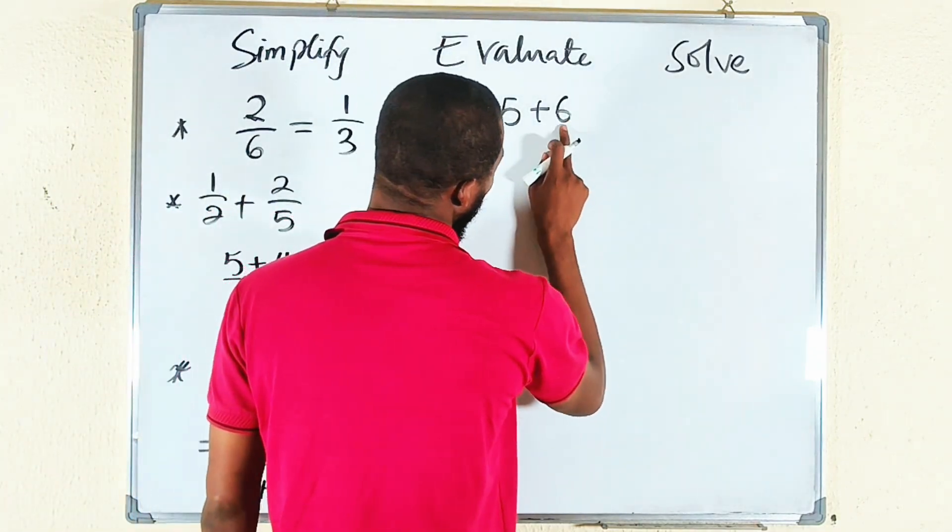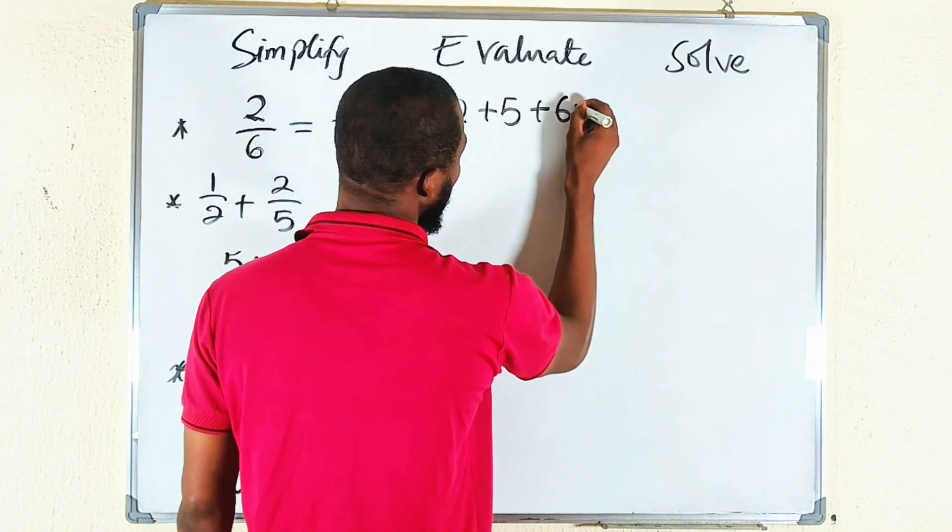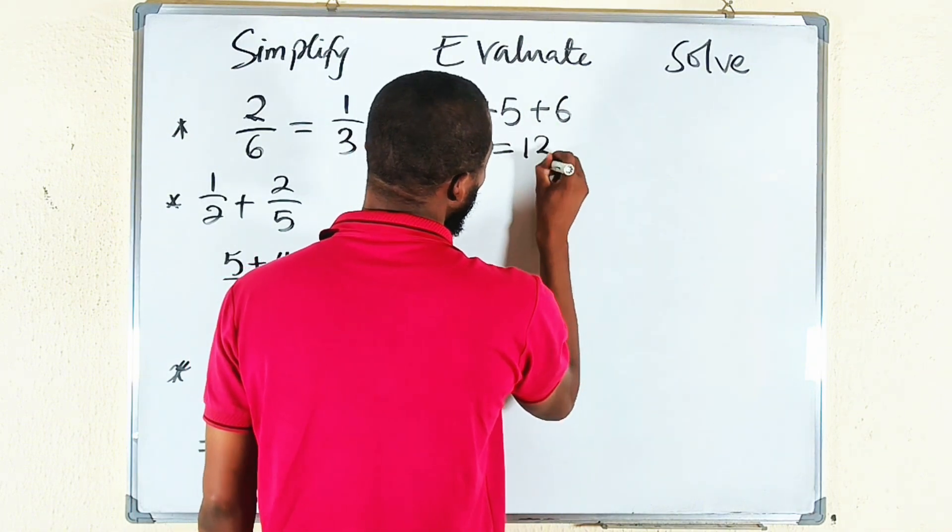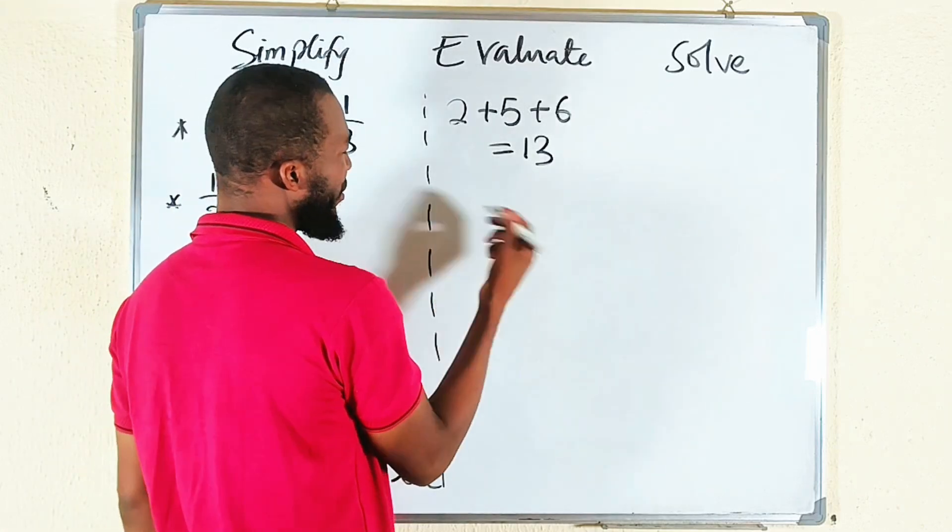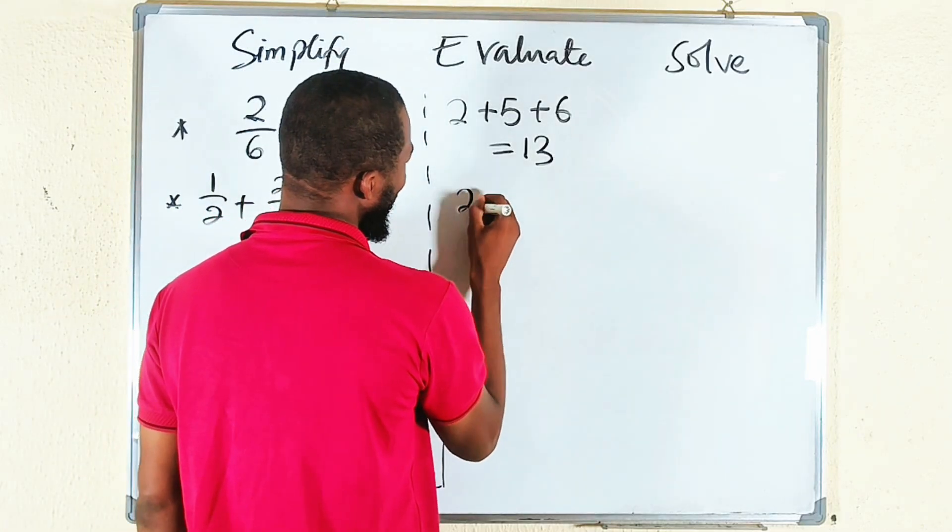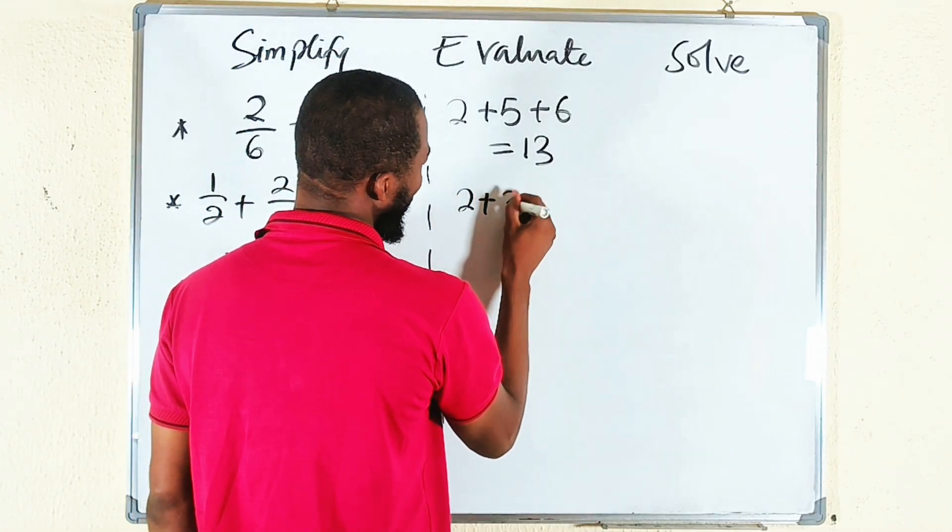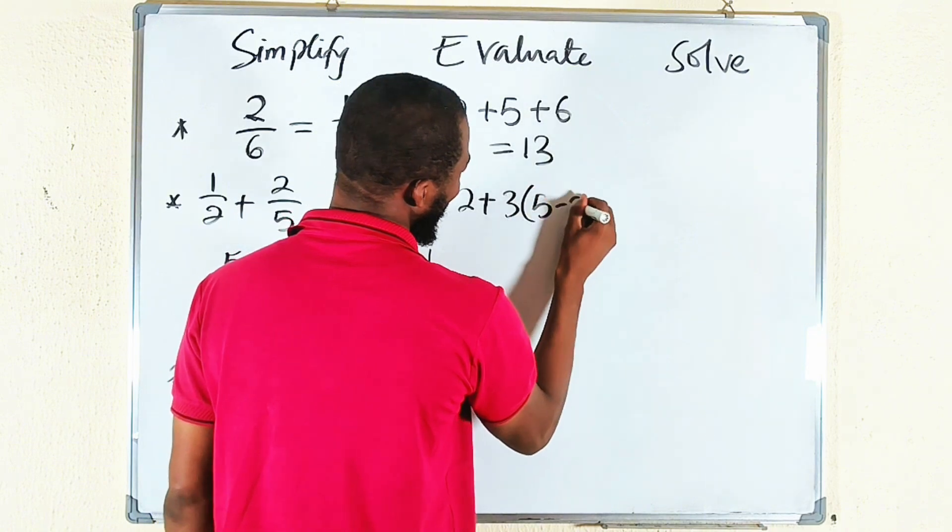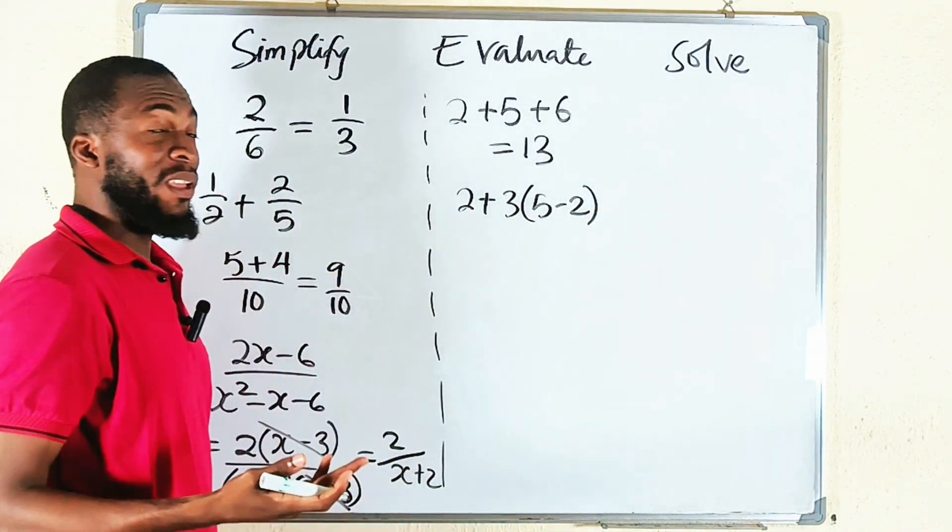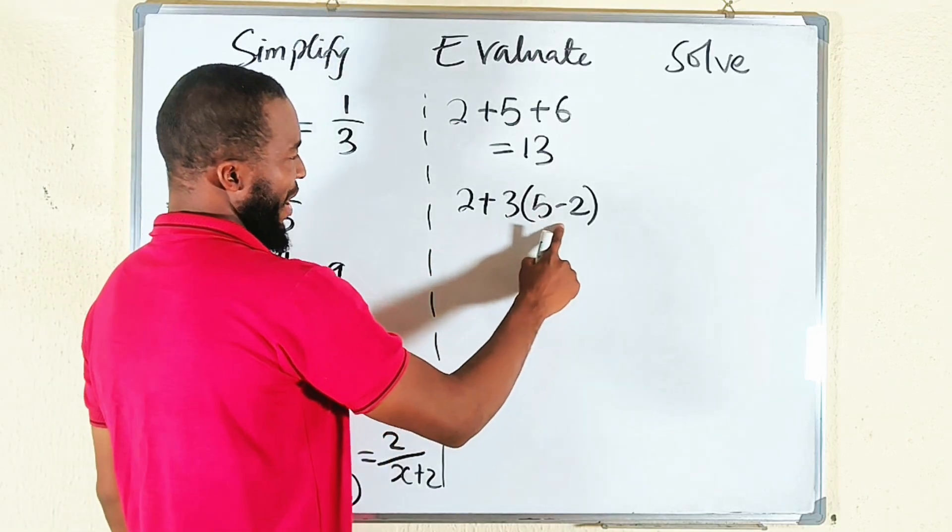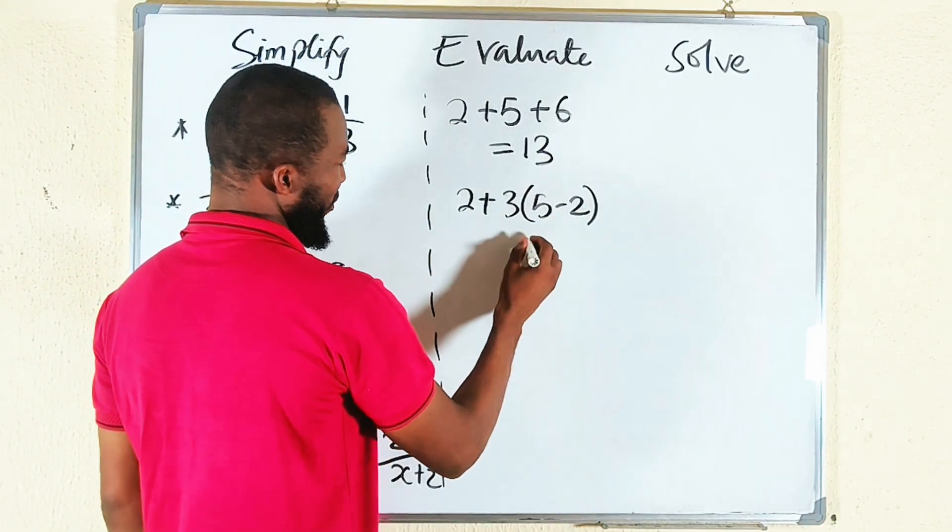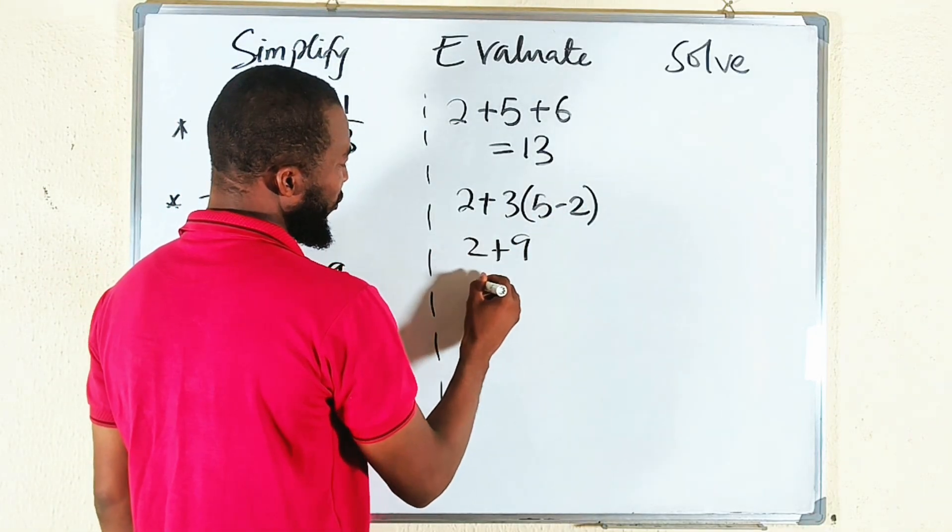So 2 plus 5 is 7, and 7 plus 6 is equal to 13. So we have evaluated this. You may have different kinds of things, like 2 plus 3 times 5 minus 2. This is also the same thing. If he asks you to evaluate this, it means 5 minus 2 which is 3, 3 times 3 is 9, plus 2 which is going to give us 11.